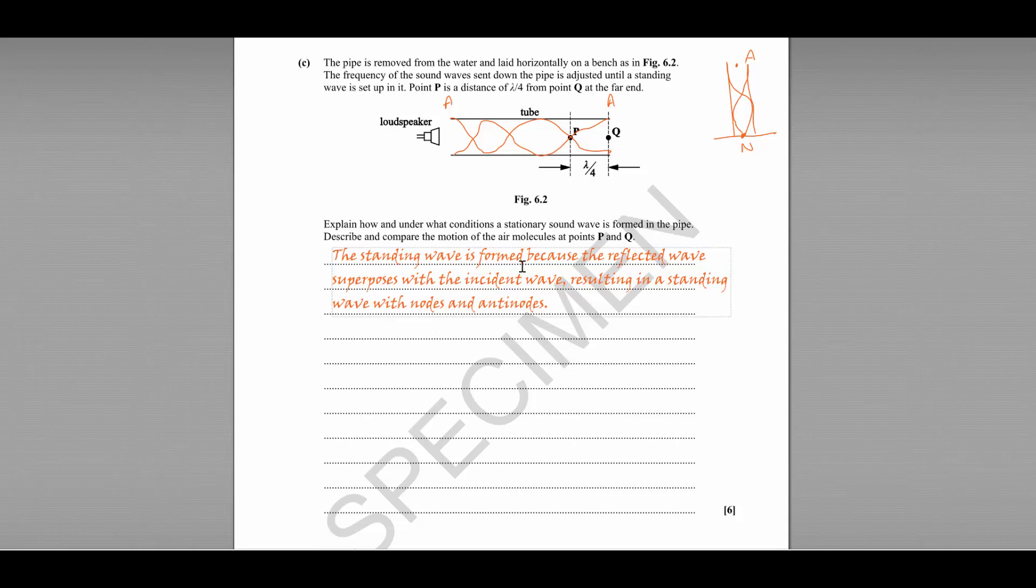We know that we have anti-nodes at each end because both ends are open. So if an end is closed, remember it's a node. If an end is open, it's an anti-node. This means that Q is an anti-node.